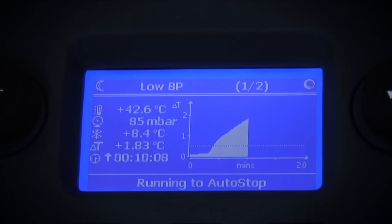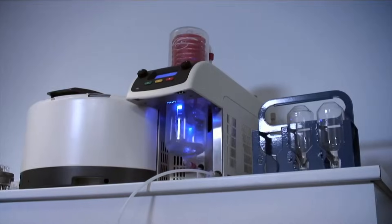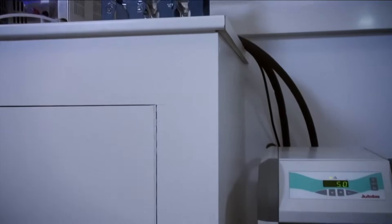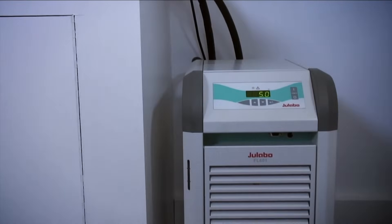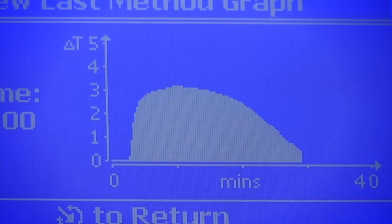You can monitor the progress of evaporation using the delta-t graph that calculates the difference between the coolant temperature entering and leaving the cold trap. When this value approaches zero, evaporation is close to an end.